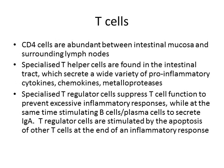T cells are also present in the GIT. CD4 cells are very abundant between the intestinal mucosa and the lymph nodes that drain lymph from the intestine. This explains a lot of the pathology of advanced HIV patients with AIDS — HIV attacks all these CD4 cells and disrupts GIT immunity, and typically AIDS patients complain of chronic, recurrent diarrhea.